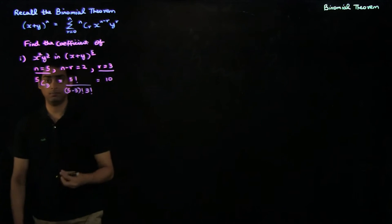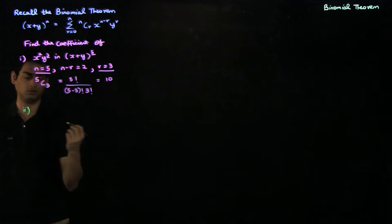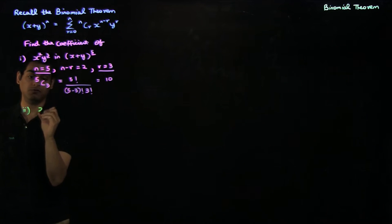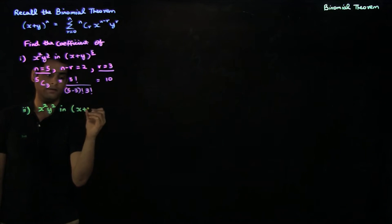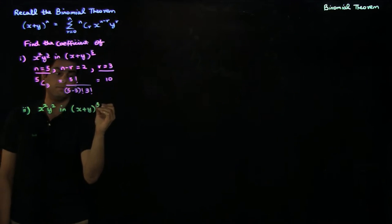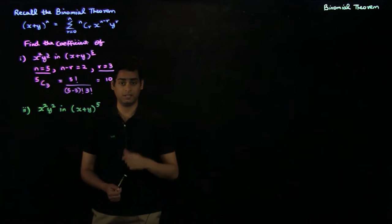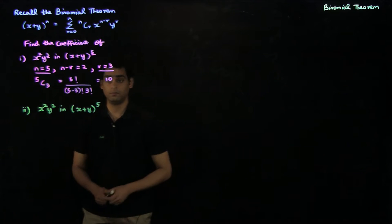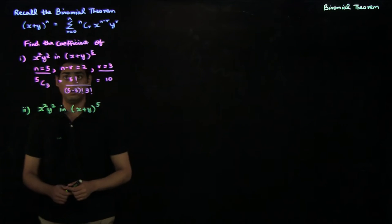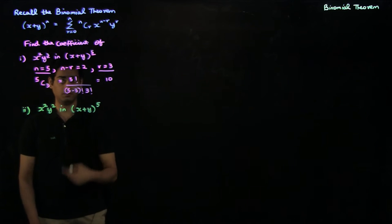Another simple application of the binomial theorem can be phrased as this question: find the coefficient of x²y² in (x + y)^5. For those of you who can directly see that the coefficient is 0, well done. To derive it in a more systematic manner, we can consider a similar approach as we had in the first example.